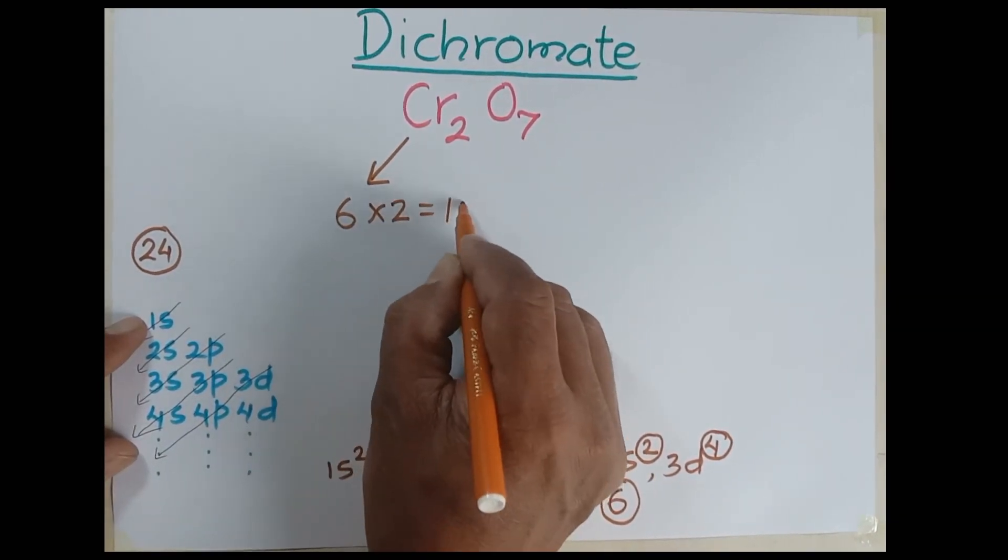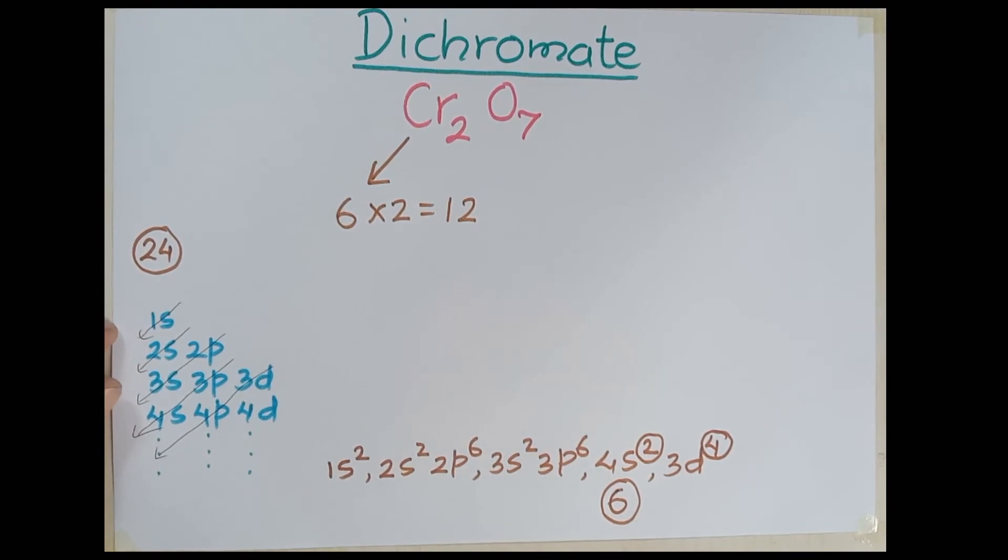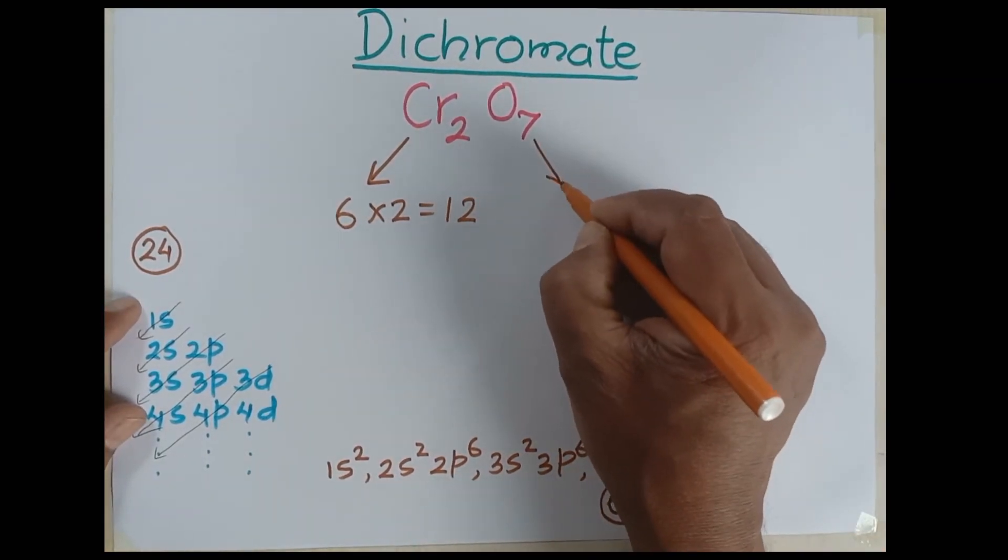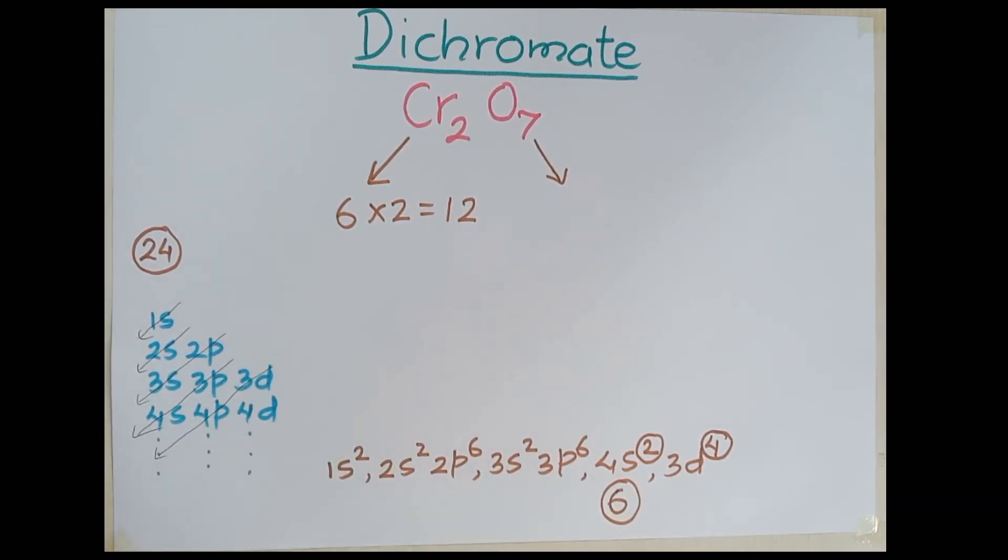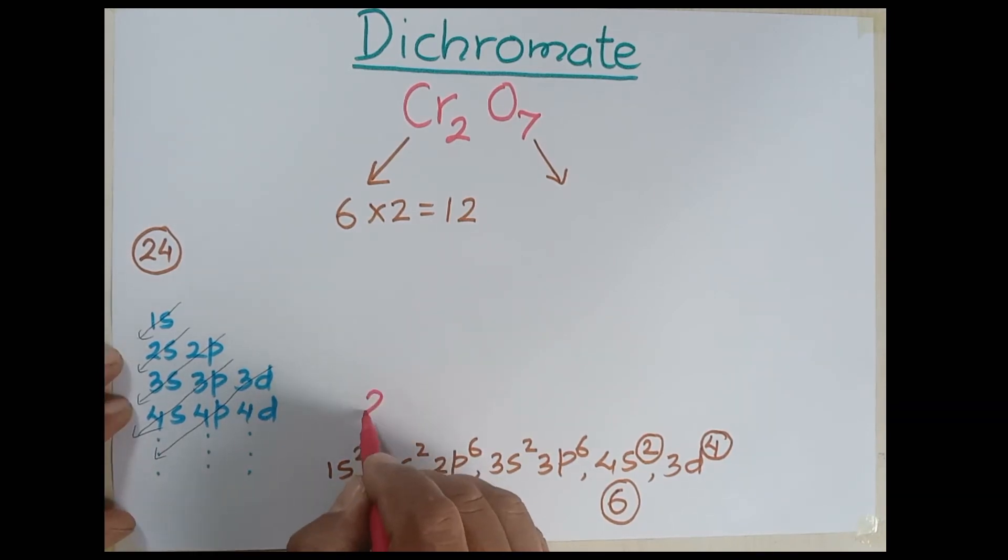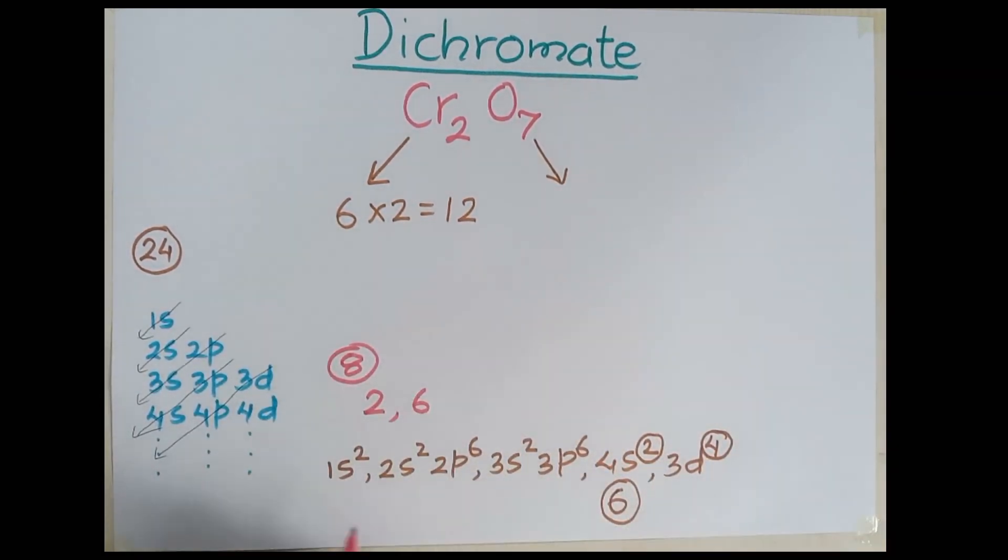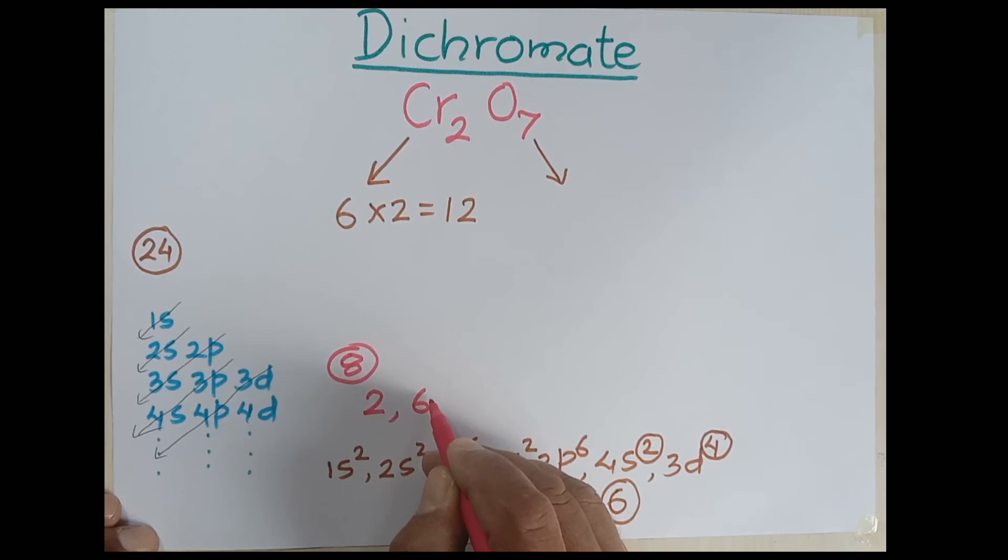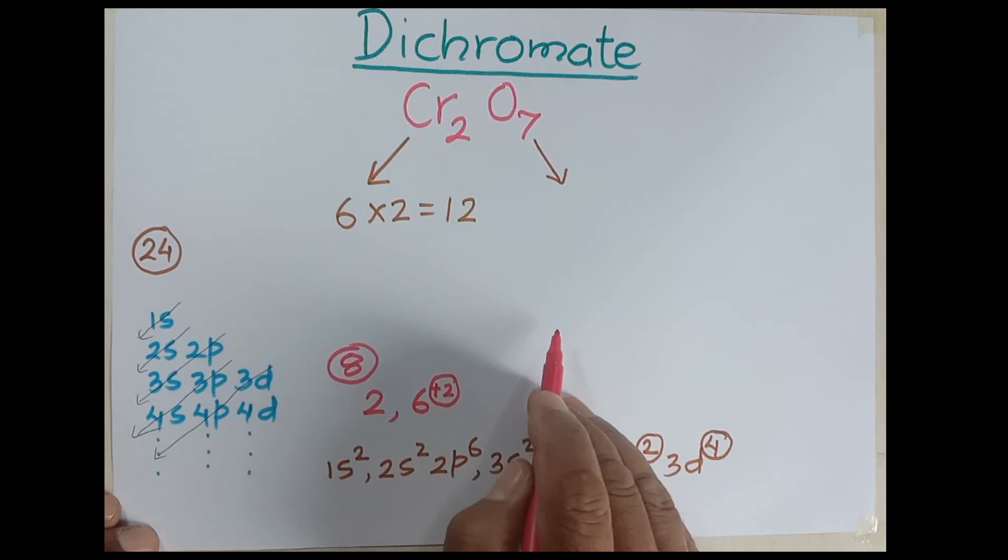In the case of oxygen, the configuration is like this - oxygen's atomic number is eight. The first orbit holds two, the second orbit holds six. It's very easy, we don't have to go through the spdf rule. The outermost shell contains six, and if we have two more electrons then it forms an octet. But two electrons are lacking in each oxygen atom.